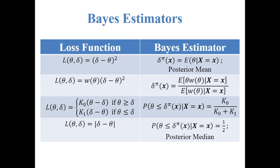We now discuss a few Bayes estimators. Under the squared error loss function, the Bayes estimator is simply the posterior mean. Under the weighted squared error loss function, the Bayes estimator is given by: expected value of theta times W(theta) given X divided by the expected value of W(theta) given X. Under the linear loss function, the Bayes estimator satisfies: the posterior probability that theta is less than or equal to delta-pi(x) given X equals K0 divided by (K0 plus K1). Under the absolute error loss function, the Bayes estimator delta-pi is the posterior median of the distribution.